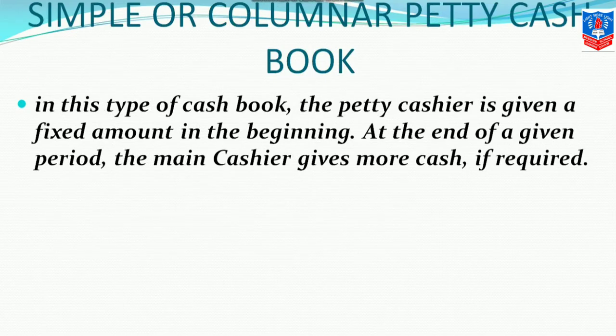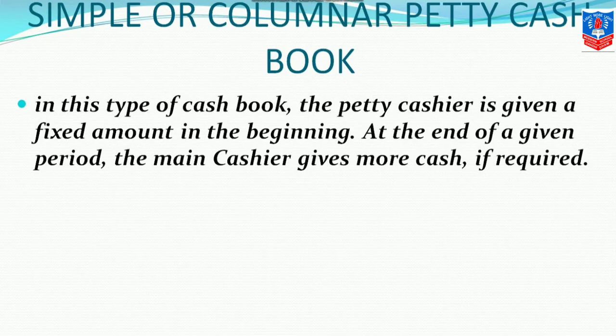In this type of cash book, the petty cashier is given a fixed amount in the beginning. At the start of the month itself, money is given to him. That fixed amount is handed over by the main cashier to the petty cashier for expenses. At the end of a given period, the main cashier gives more cash if required. For example, the main cashier at your home is your father who is earning, and in the case where your mother is a housewife.